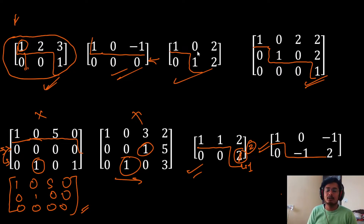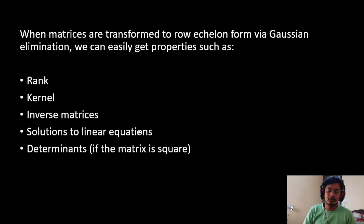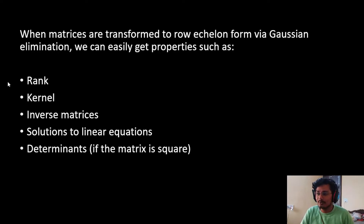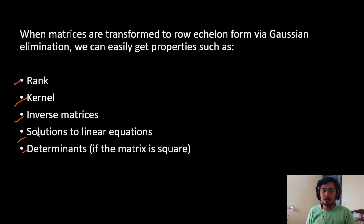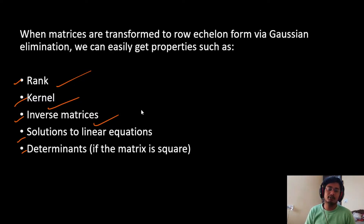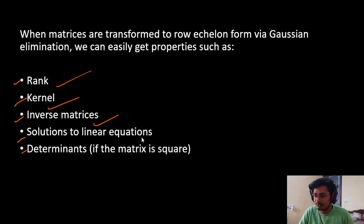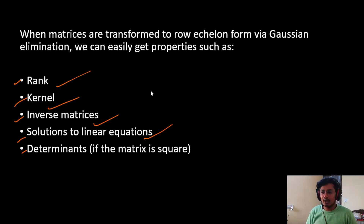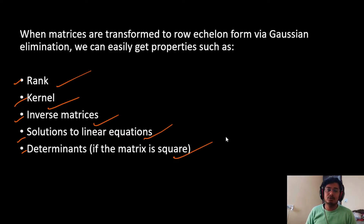Now, why are we learning row echelon form? After converting a matrix into row echelon form, we can find several properties: the rank of a matrix, the kernel, the inverse matrix — we can also find the inverse using row echelon form. We will use Gauss elimination method to solve linear equations soon, and we can also find the determinant if the matrix is a square matrix.